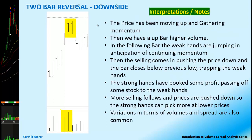Let us look at the interpretation for the 2-bar reversal downside pattern. As you can see, the prices have been moving up, gathering momentum. As the prices are moving up, the weak hands are getting in. Then we have a bar on higher volume — an up bar on higher volume. In the following bar, the weak hands are jumping in, in anticipation of continuing momentum.